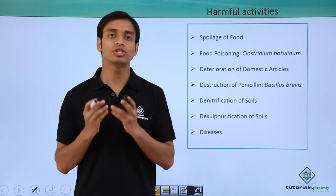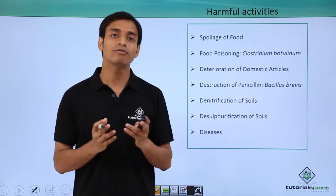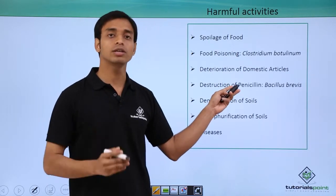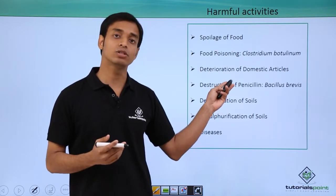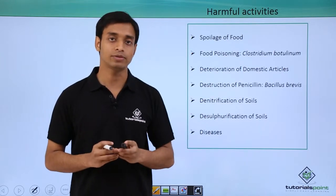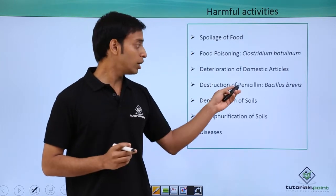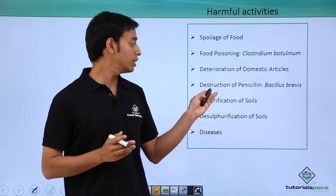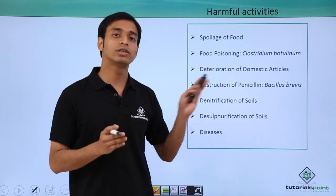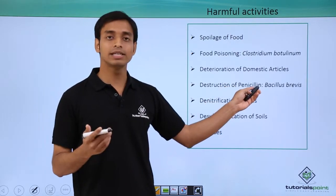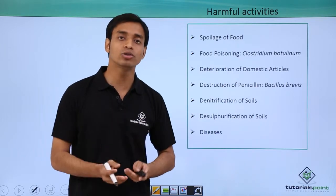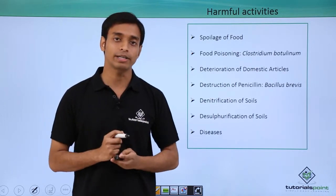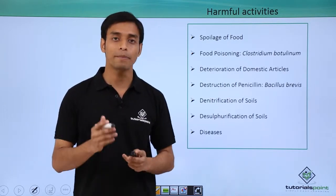Bacteria also cause destruction of penicillin. Penicillin is one of the most common antibiotics used for treatment of various diseases, and it was the first antibiotic discovered by scientist Fleming. An organism called Bacillus brevis causes destruction or damage of the antibiotic penicillin, making us unable to use penicillin as an effective antibiotic for treatment of various bacterial diseases.